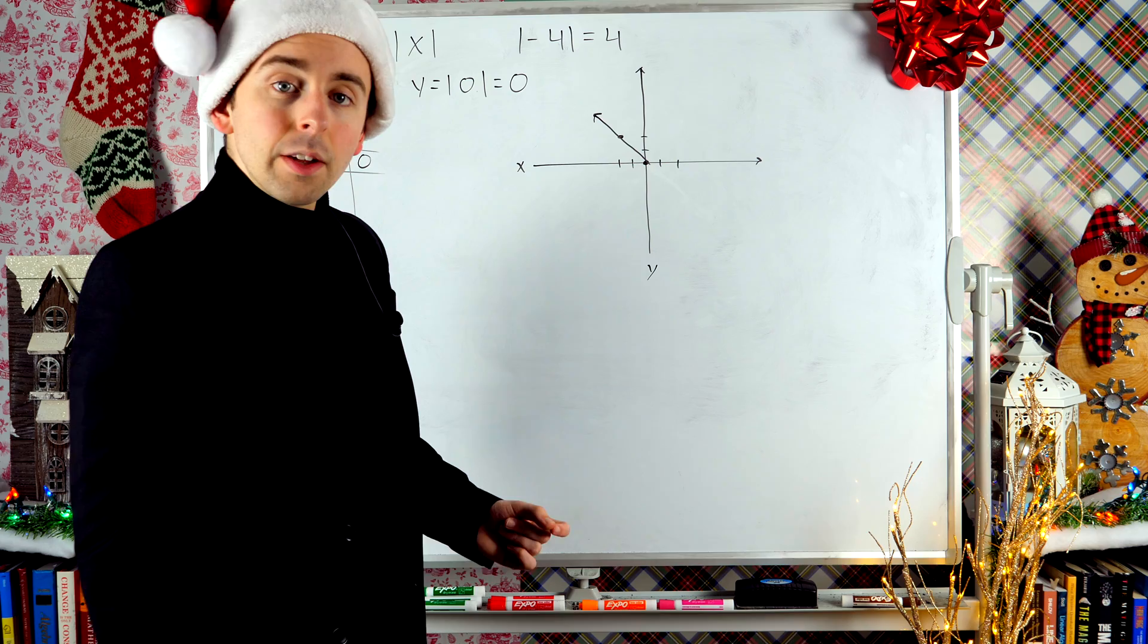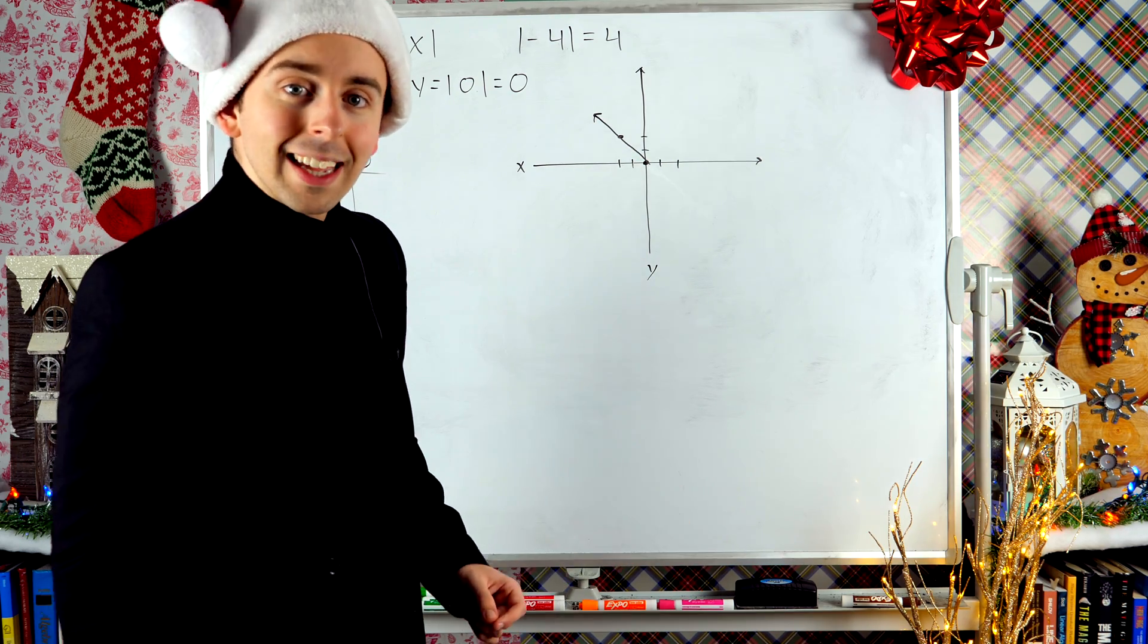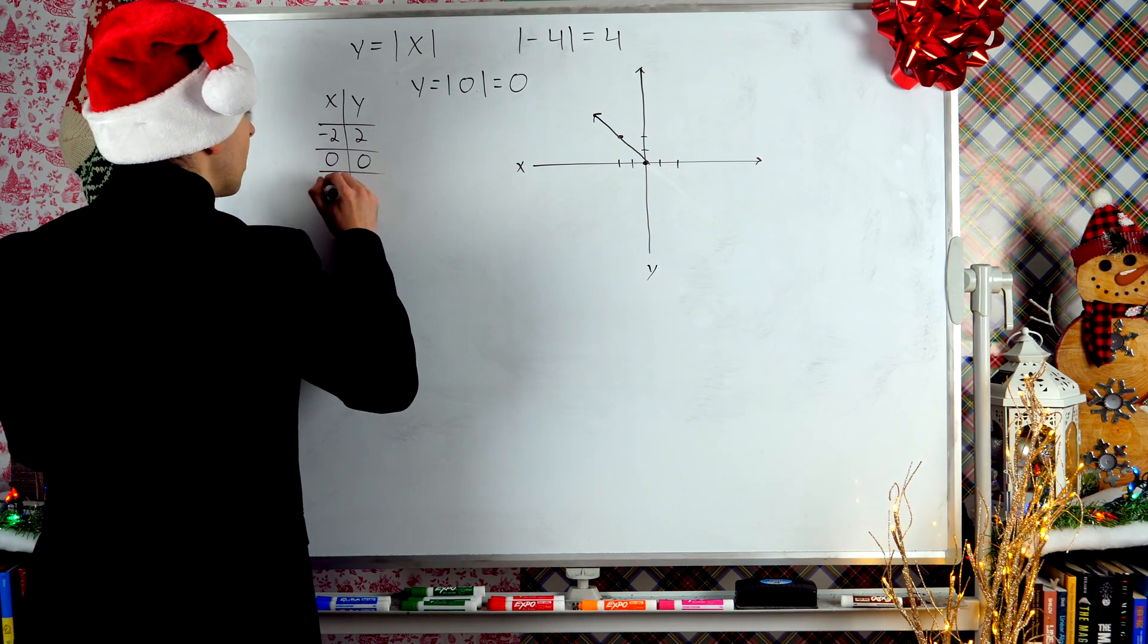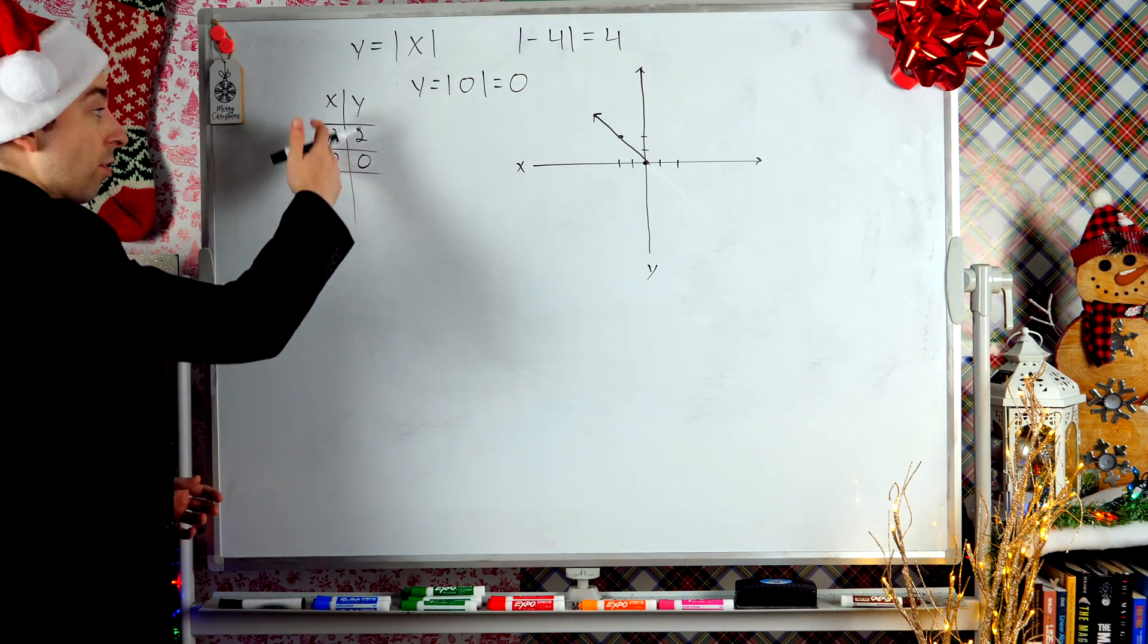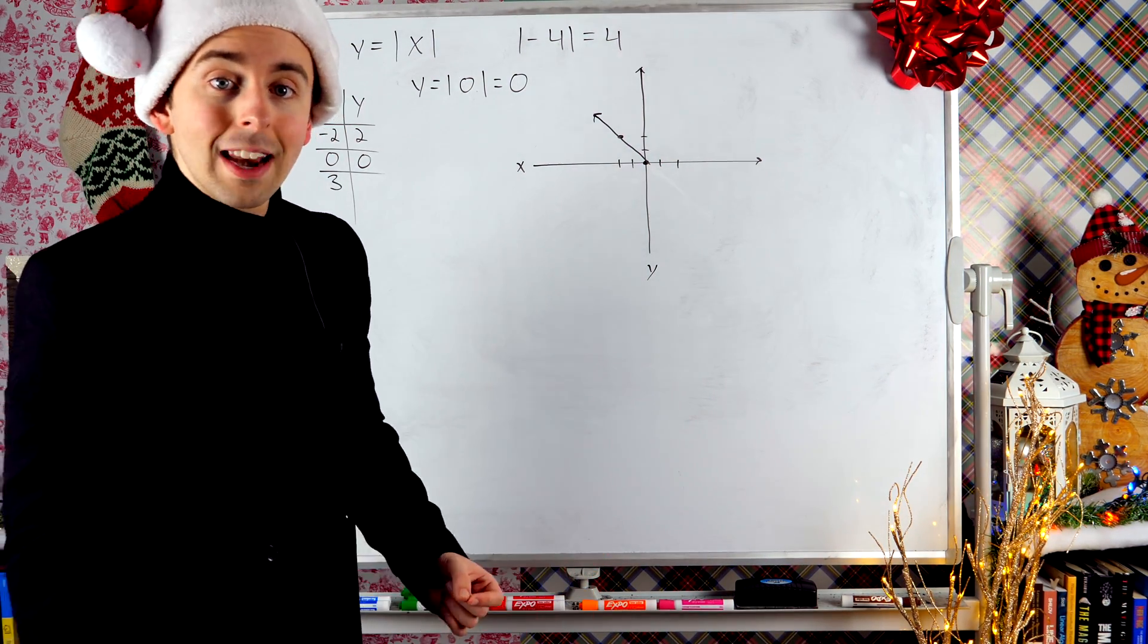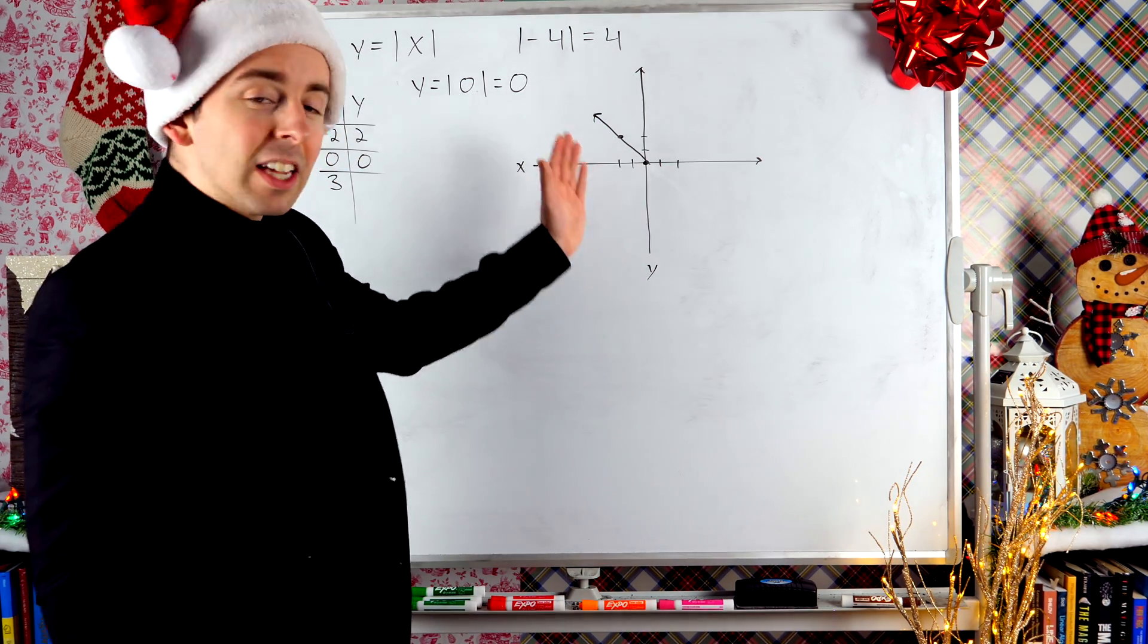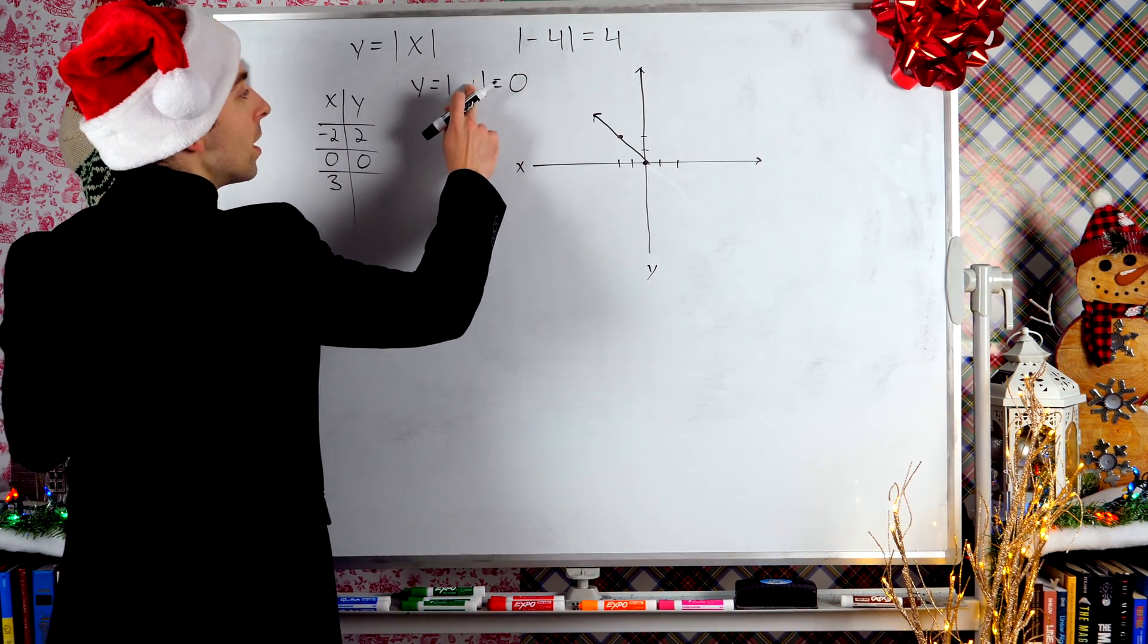We've plugged in a negative x. We've plugged in x equals zero. So let's try plugging in a positive x now. Suppose I choose x equals three. Again, it's totally up to you to pick some points, to pick some x values here. I don't have to follow any particular pattern. I'm trying to pick points that will give me a good idea of what this graph looks like.